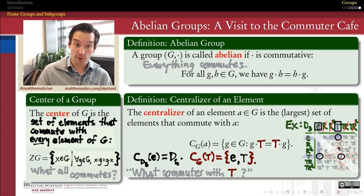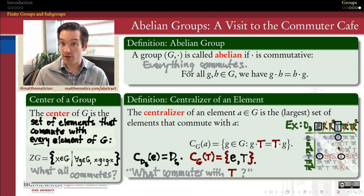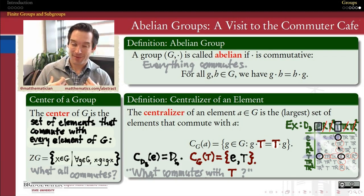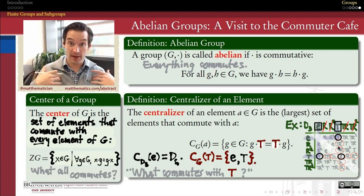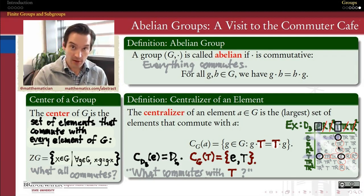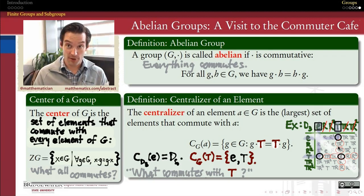So the only elements of the dihedral group of order 6 which commute with T are T itself and the identity element. That's how we talk about the centralizer of an element — it answers the question: what all commutes with me? We know that if the element is the identity, then everybody commutes with it. But if it's not the identity, you can have a pretty small centralizer. This example illustrates as small as a centralizer may get, since every centralizer must always include the identity element and the element itself.